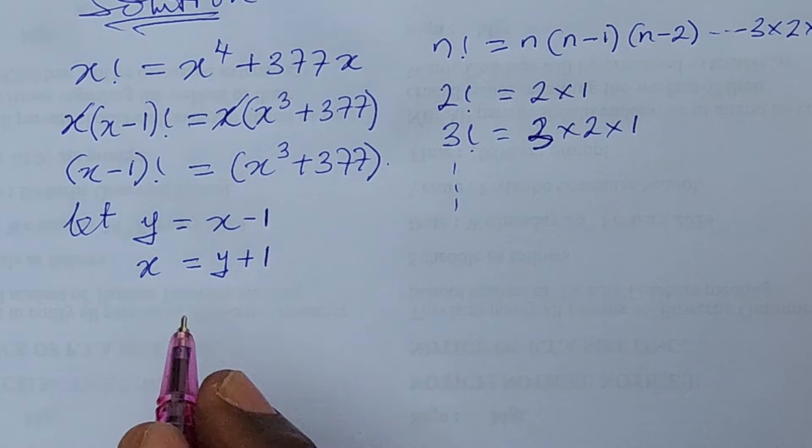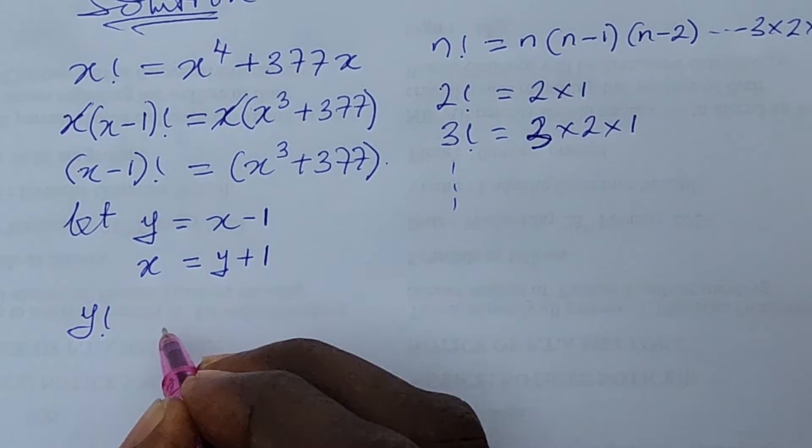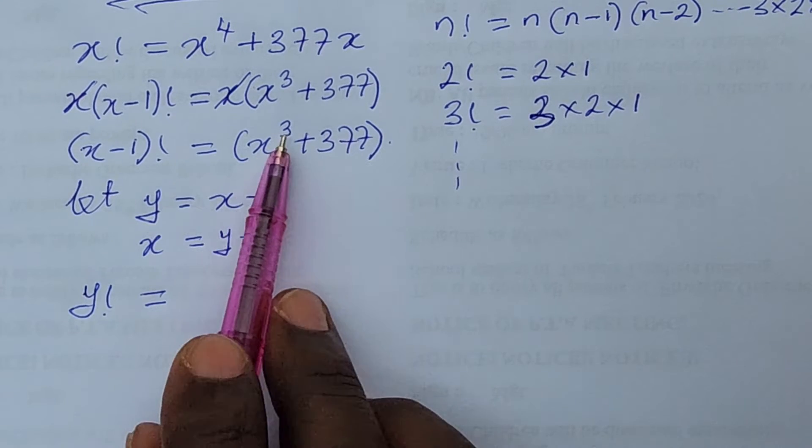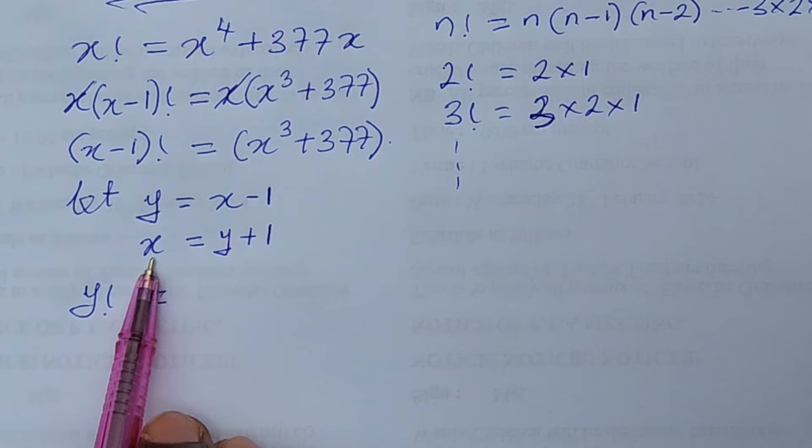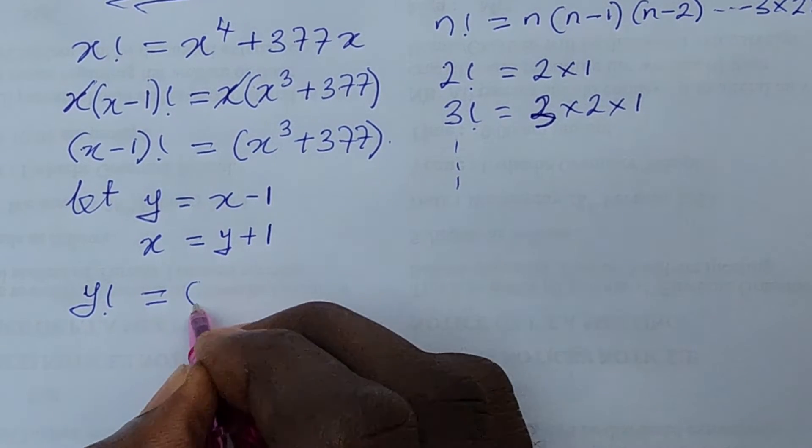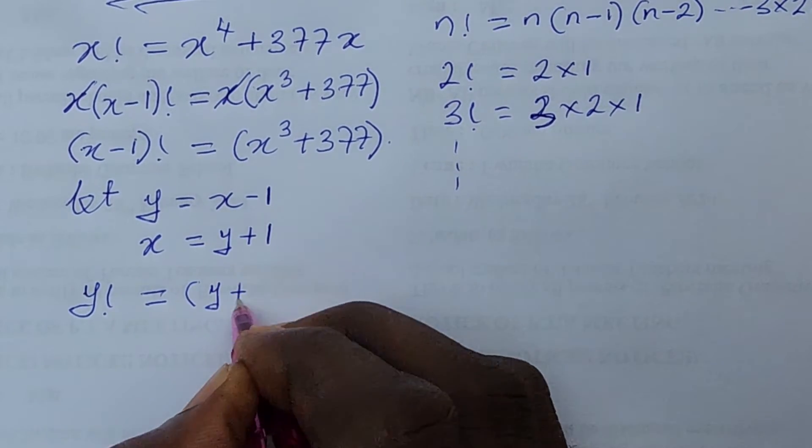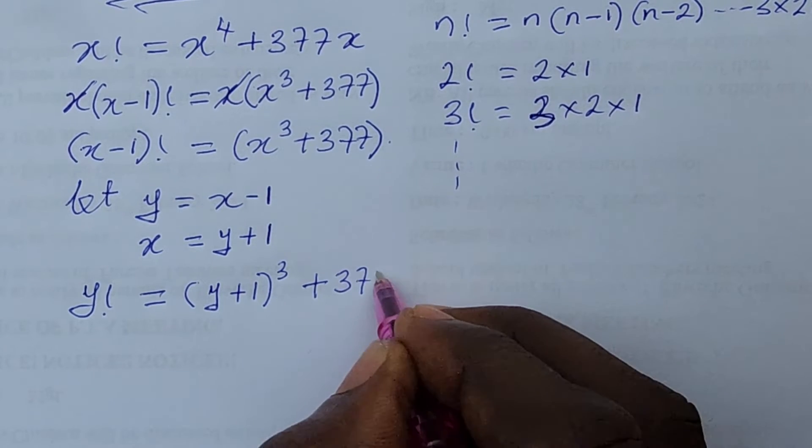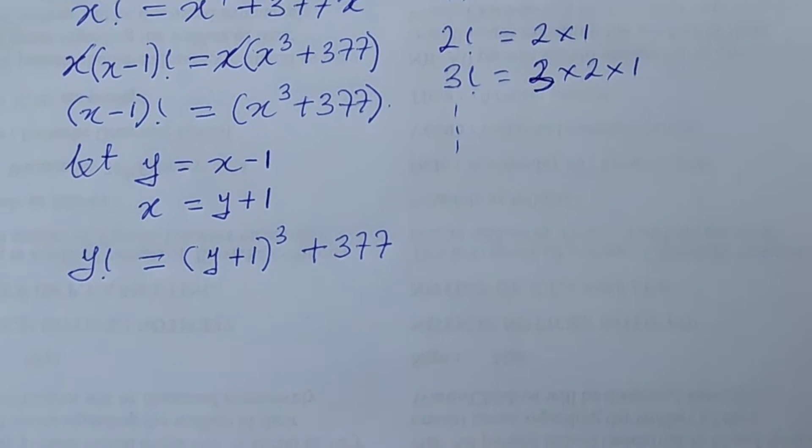Okay so let's substitute these values into this expression we have in here. The left hand side is going to give us here y factorial is equal to what we have here. We are having x to the power of 3. And look at the value of x here. So we're going to have here automatically y plus 1 all to the power of 3 plus 377. Easy.